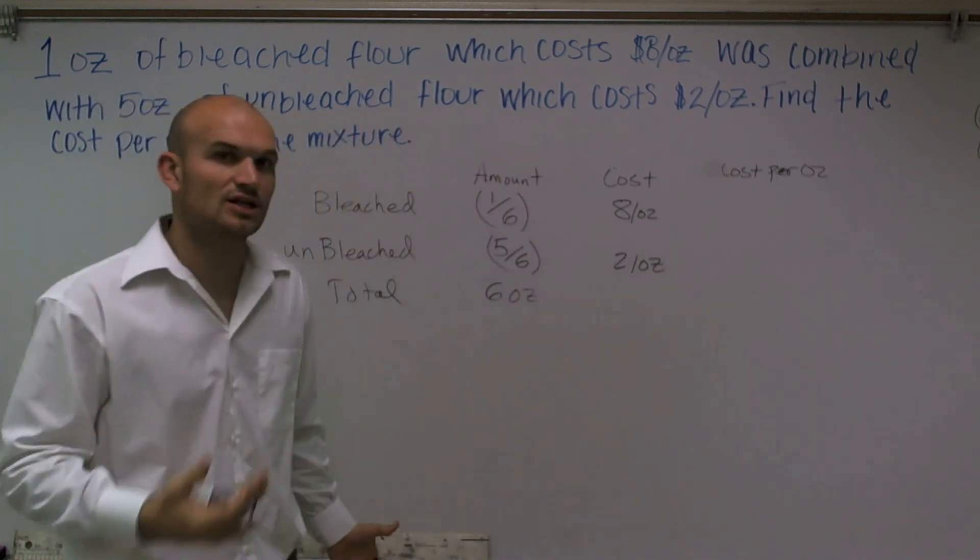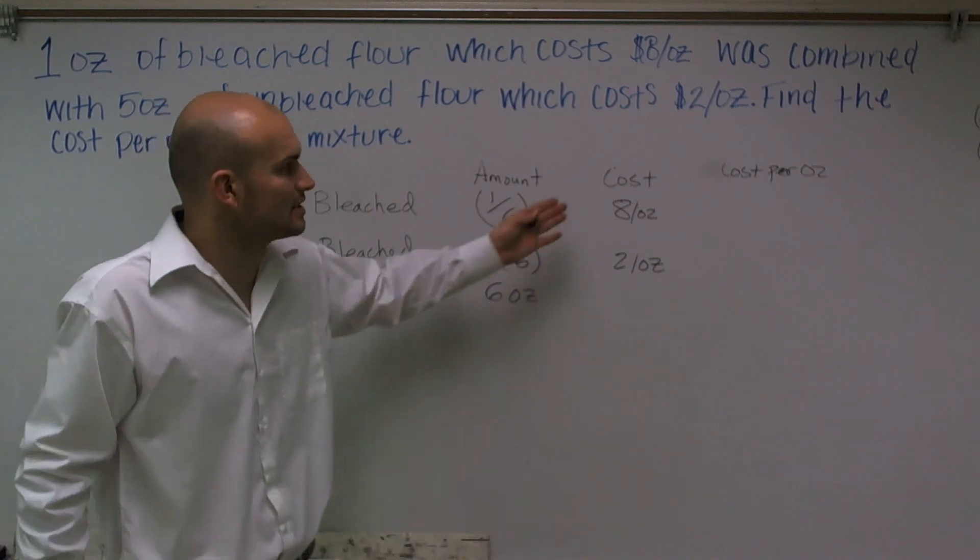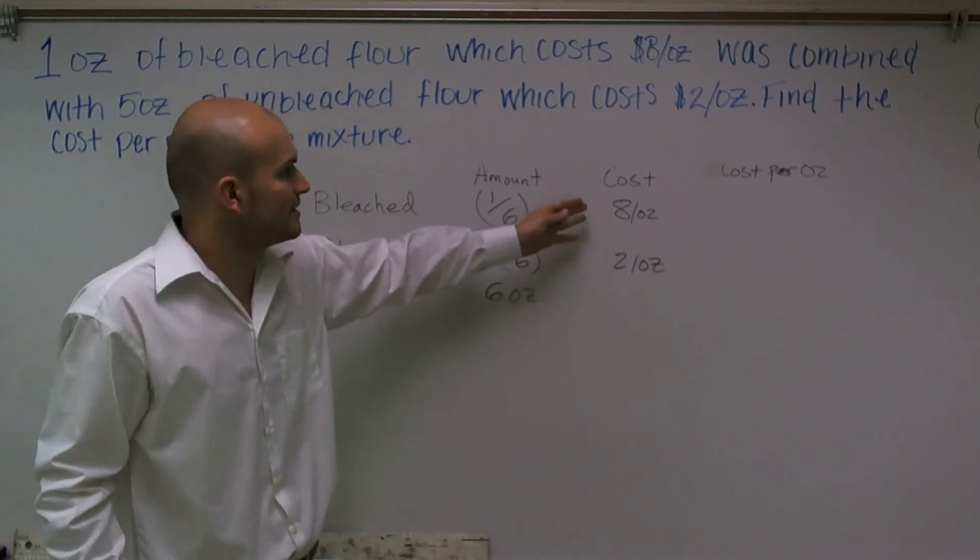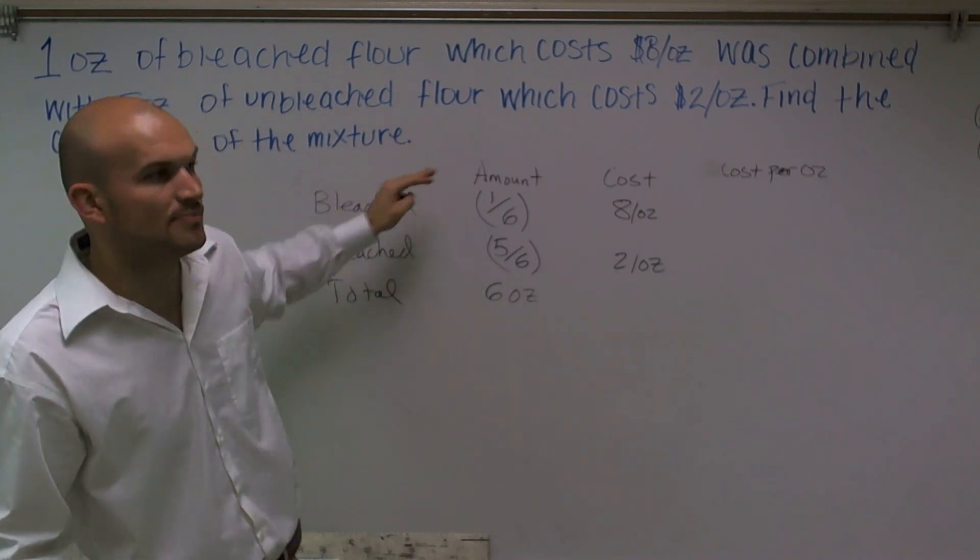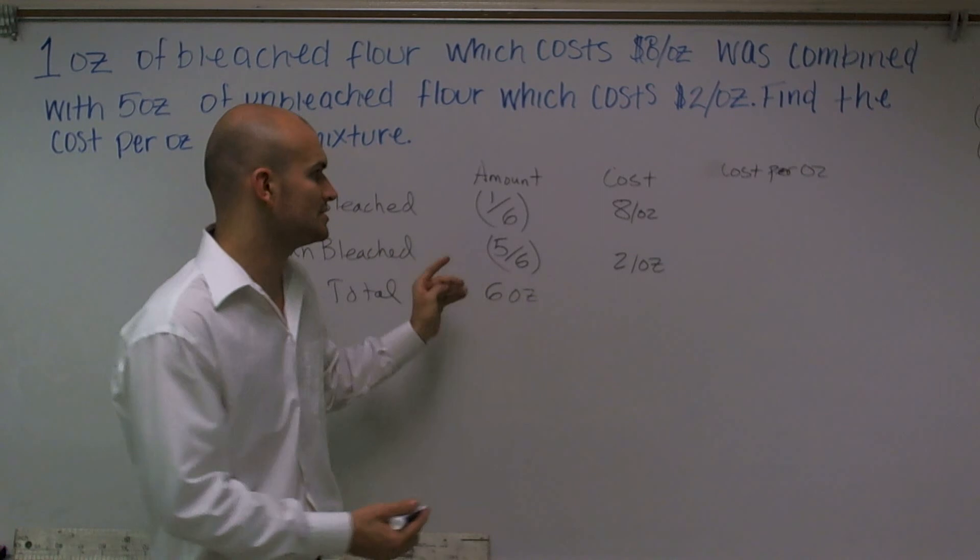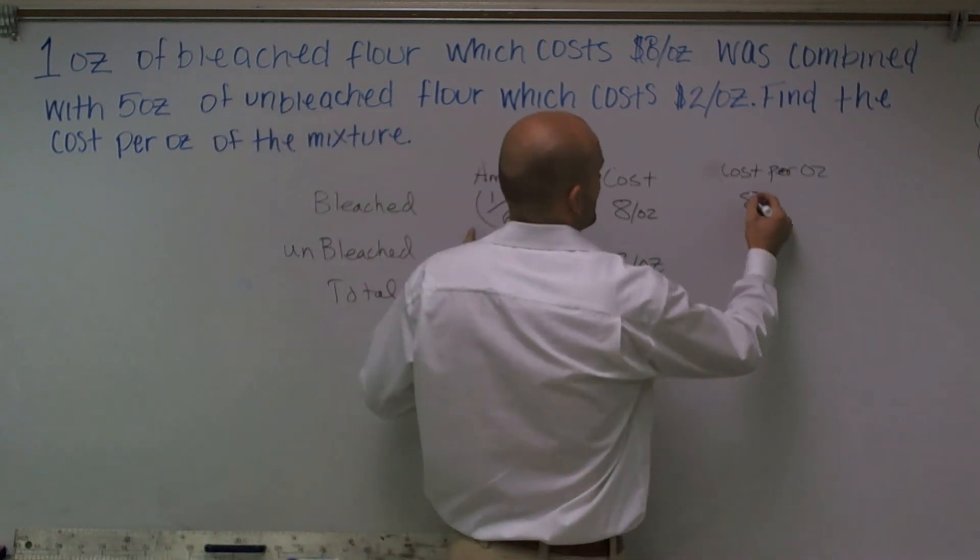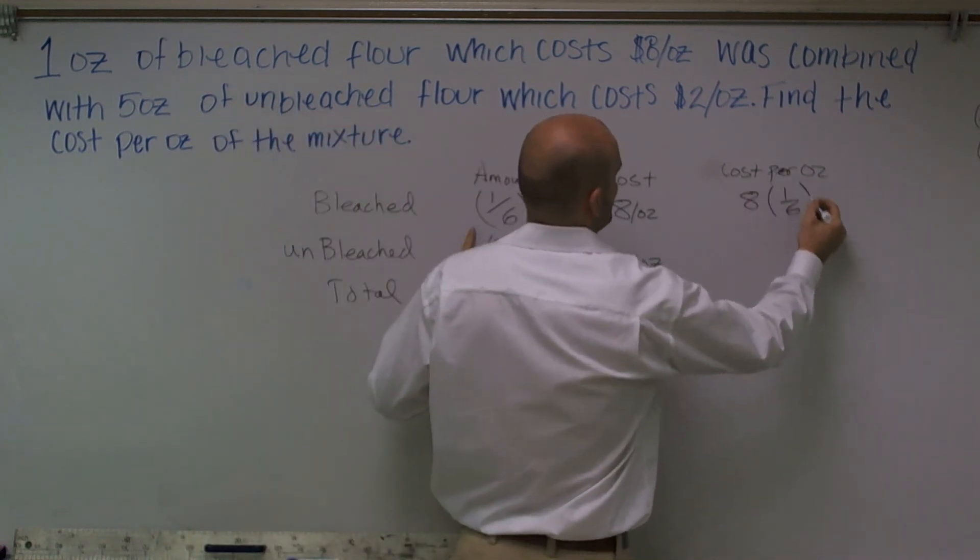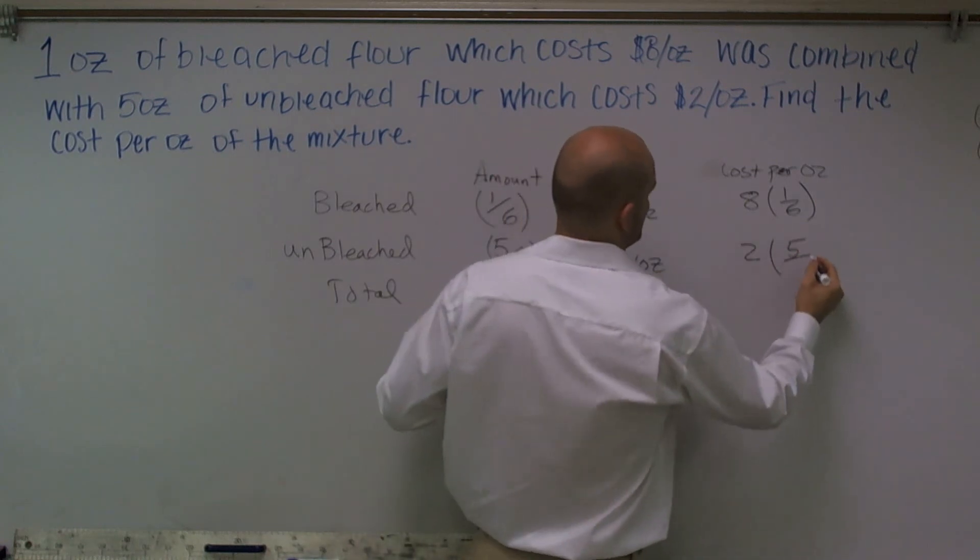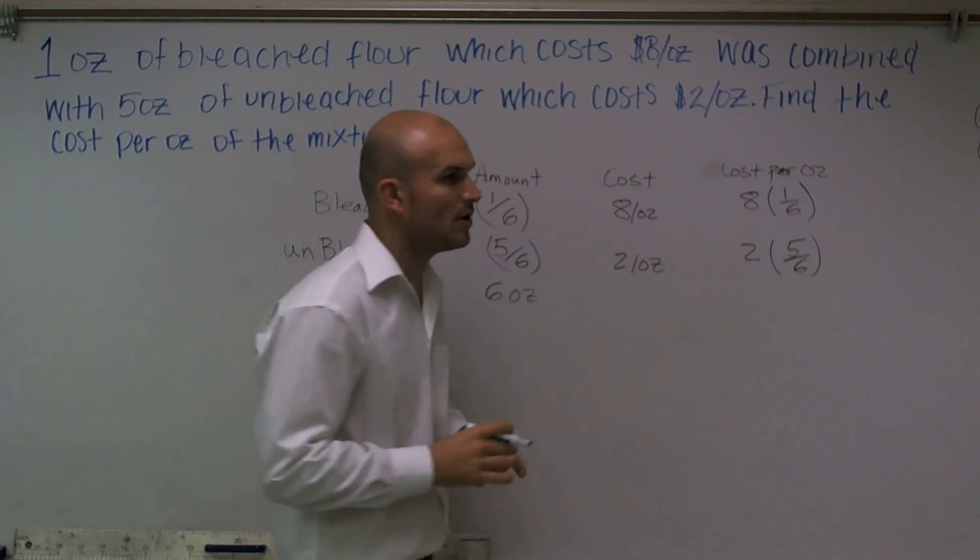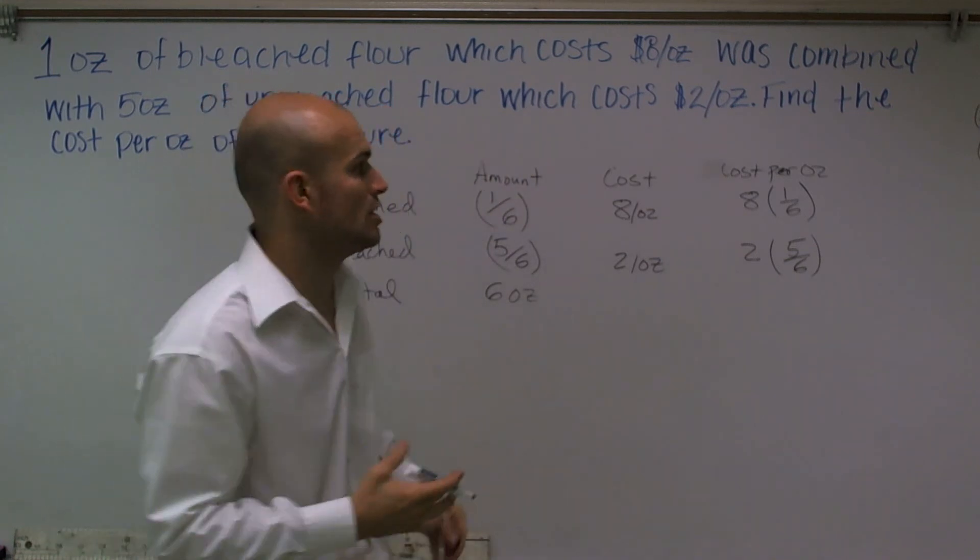So if I'm going to look at the cost, what I'm going to do is multiply 8 times 1/6. I'm going to do the same thing over here, 2 times 5/6. So when I multiply those two, that's going to give me my cost per ounce.